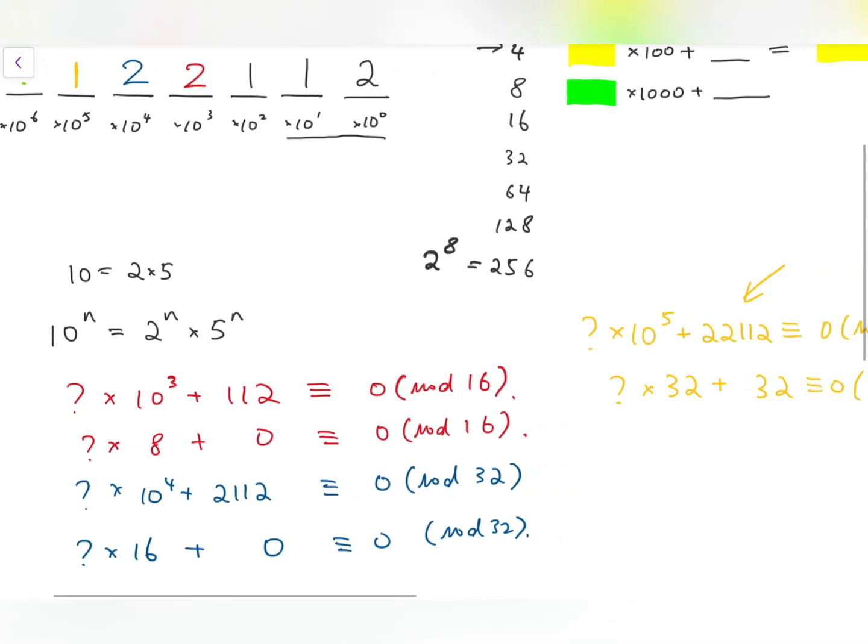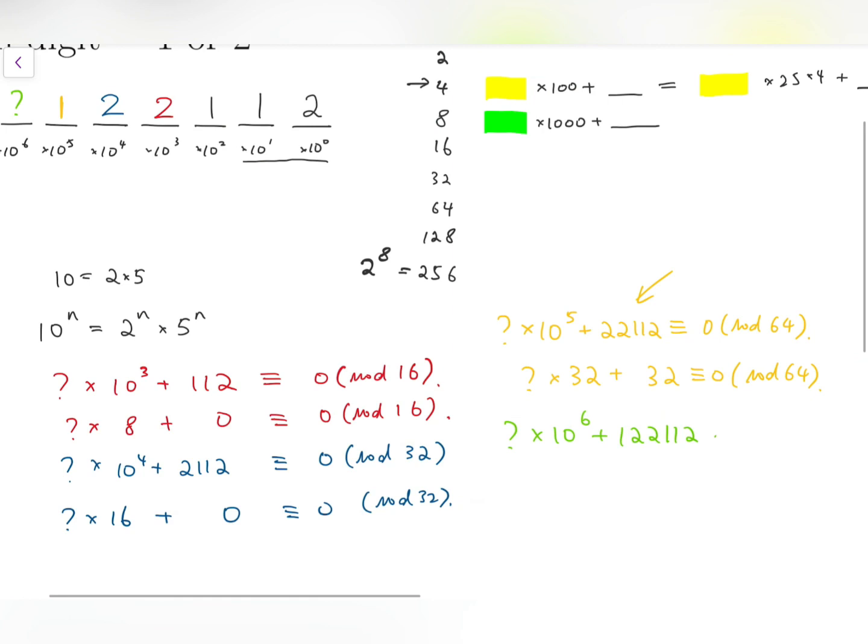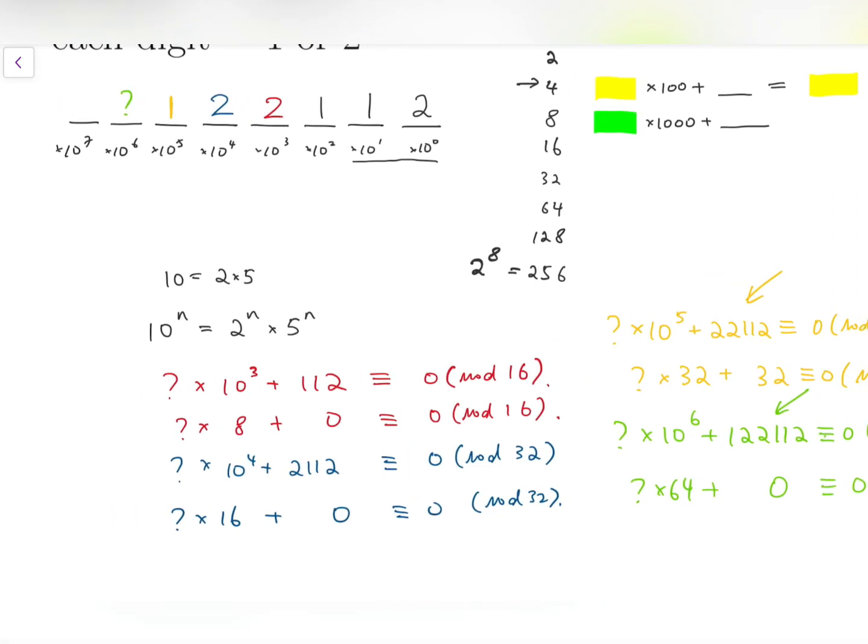And then the green question mark. The green question mark times 10 to the power 6 plus 122112 is congruent to 0 mod 128. So the question mark times 64 plus the remainder of this green number divided by 128. So indeed, if we divide it, we have 0 as remainder. So the green question mark has to be 2.